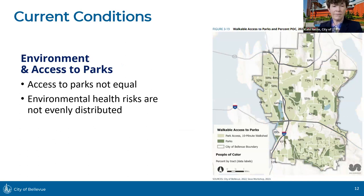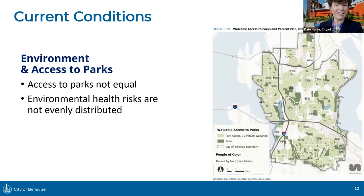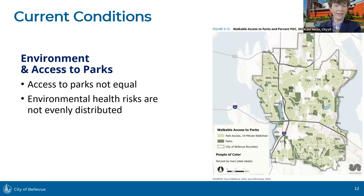The current conditions around access to parks and the environment were also examined — I thought this would be of particular interest to this group. Access to parks is not equal across the city: places that are more white and more wealthy tend to have better access to parks, while places that are poorer and less white have less. That is something our parks department wants to rectify, and it's also something for us to consider as we update the comprehensive plan. Environmental health risks are also not evenly distributed — non-white residents are more likely to live in areas with more health risks.